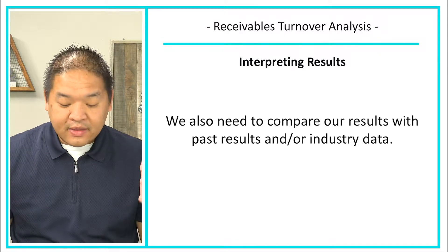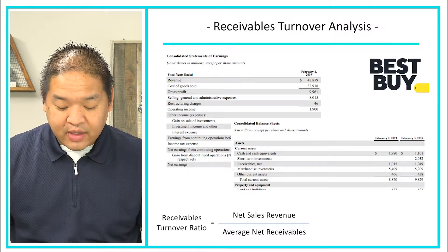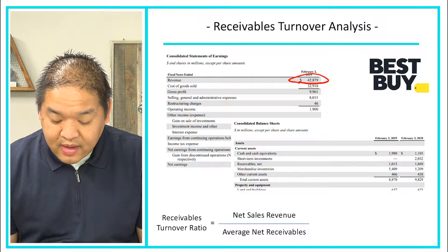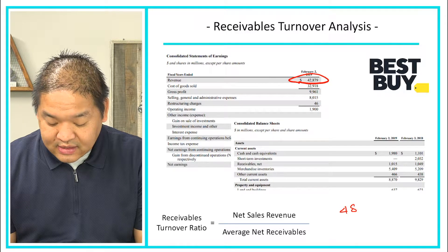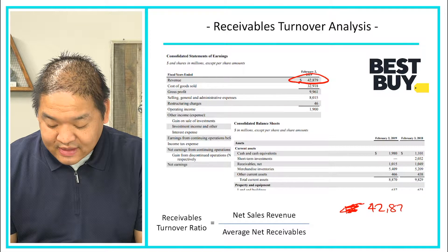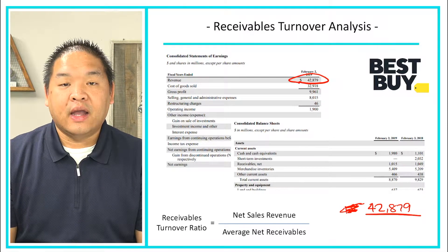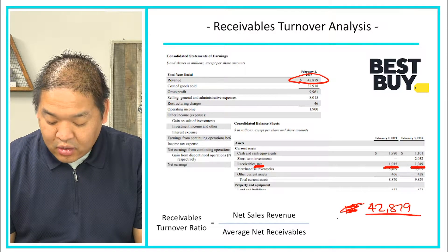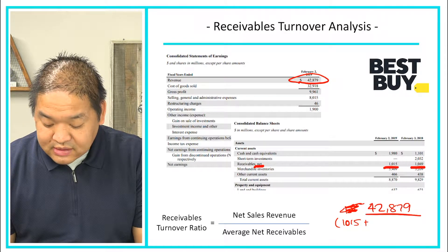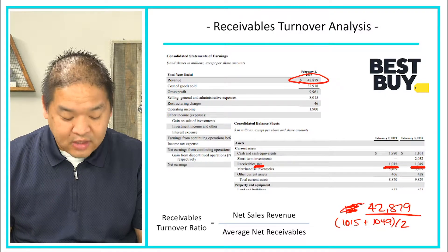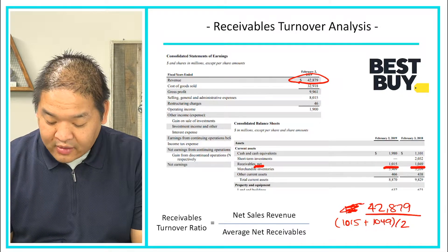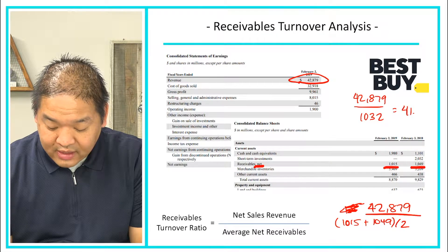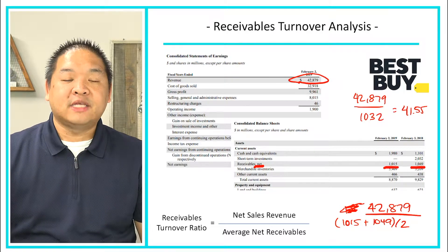Let's take a look at an example using Best Buy. We have their financial statement and we can calculate their receivable turnover. Their net sales revenue is 42,879 million. We divide that by their average net receivables. Their net receivables are 1,015 and 1,049, so the calculation is 1,015 plus 1,049 divided by 2, which gives us 1,032. So 42,879 divided by 1,032 gives us 41.55.